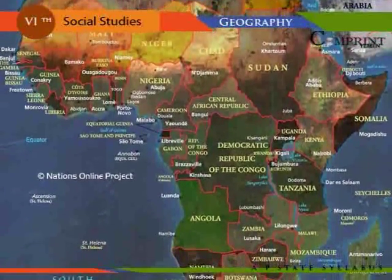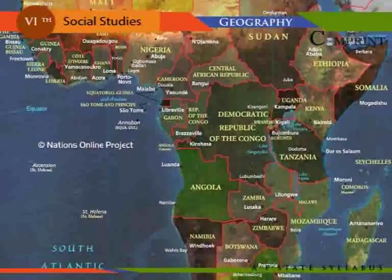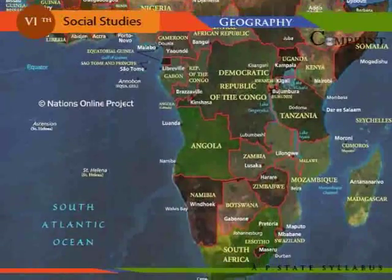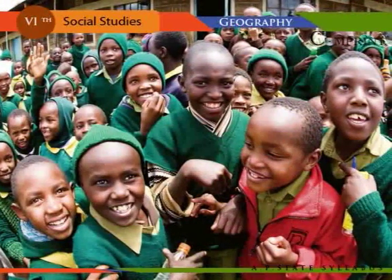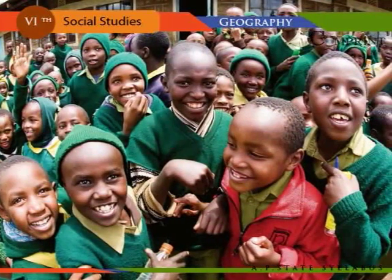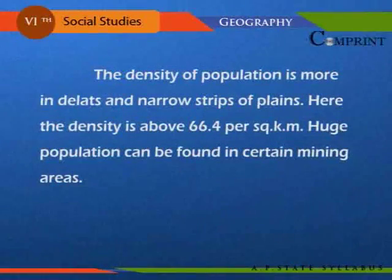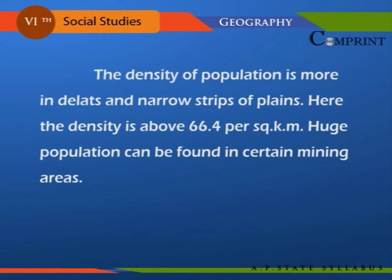Africa has an area of approximately 30 million square kilometers with a population of 885 million in 2004, representing 13 percent of the world's population. The average density of population in Africa is 65 per square kilometer. The density is higher in deltas and narrow strips of plains, where it is above 66.4 per square kilometer. Huge populations can be found in certain mining areas.